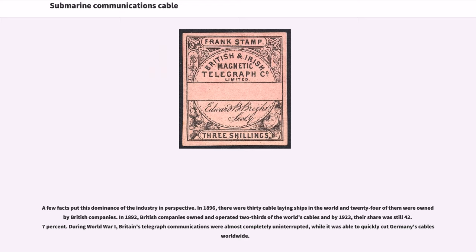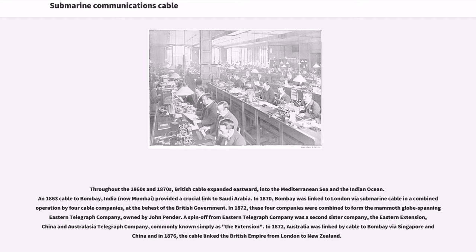During World War I, Britain's telegraph communications were almost completely uninterrupted, while it was able to quickly cut Germany's cables worldwide. Throughout the 1860s and 1870s, British cable expanded eastward into the Mediterranean Sea and the Indian Ocean. In 1870, Bombay was linked to London via submarine cable in a combined operation by four cable companies, at the behest of the British government. In 1872, these four companies were combined to form the mammoth globe-spanning Eastern Telegraph Company, owned by John Pender.